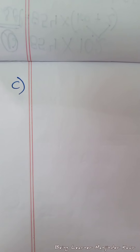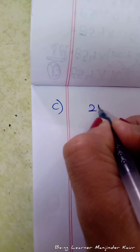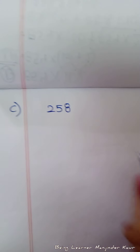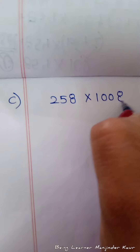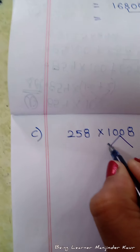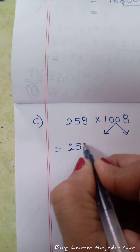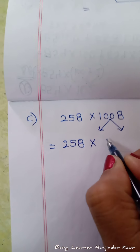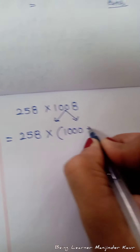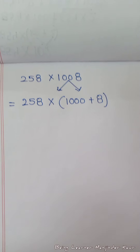Question number 4, exercise 2.2 — the sum is 258 multiplied by 1008. हम लोगों ने suitable property use करके इसको solve करना है, ना कि direct multiplication करनी है। सबसे पहले हम लोग splitting करेंगे: 258 multiply bracket 1000 plus 8, मैंने 1008 को 1000 plus 8 में split कर लिया है।